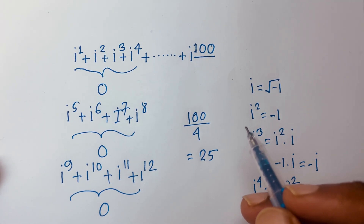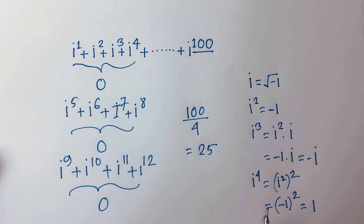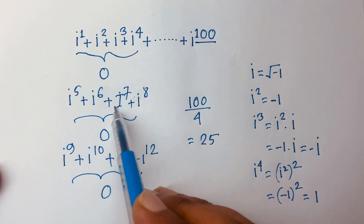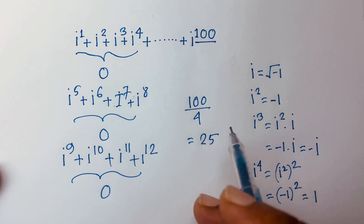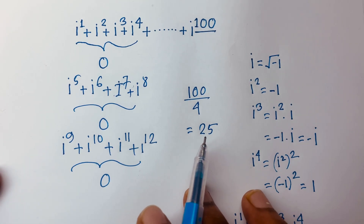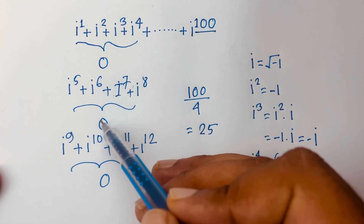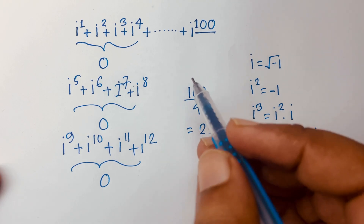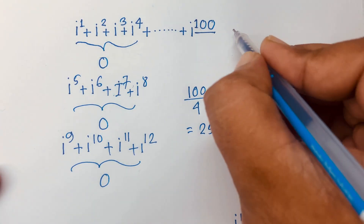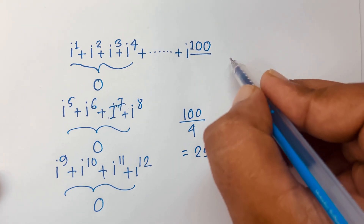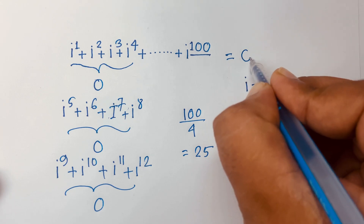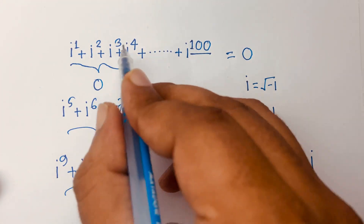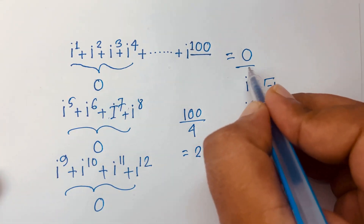So there are 25 groups, and every group's value is zero. Adding 25 zeros gives us zero, so the final answer is zero.